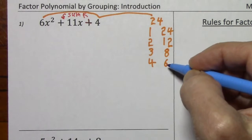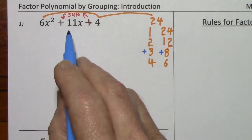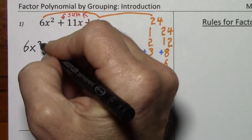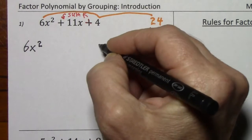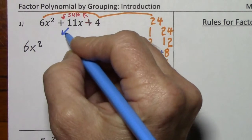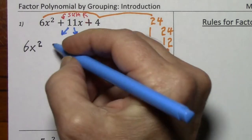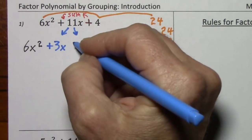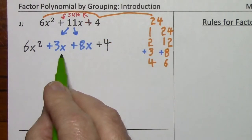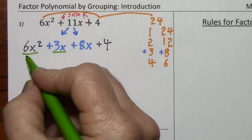Looking through our factor pairs, if you had positive 3 and positive 8, you could get positive 11. So we keep the first term, we keep the last term, and we rewrite this middle term as positive 3x and positive 8x. Now the grouping part is: you group together the first two and factor out the GCF — in this case, 3x.